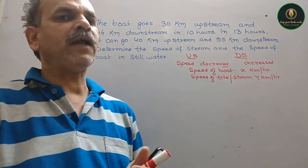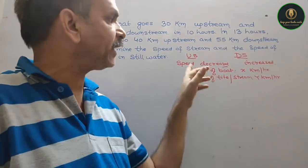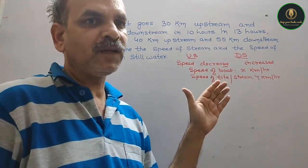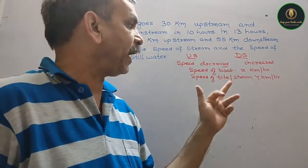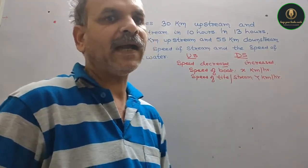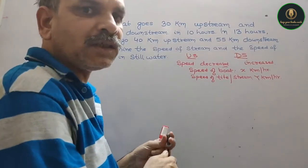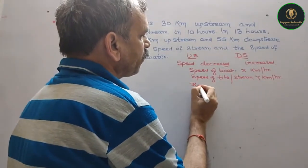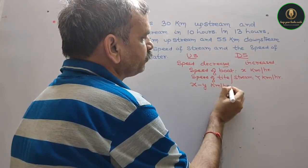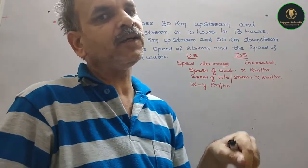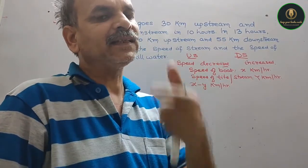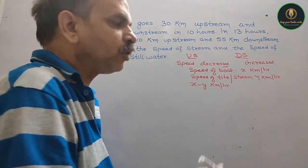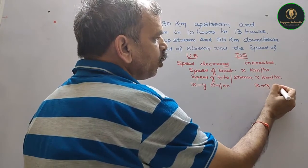Now, when we are going upwards, our speed gets decreased or reduced. The speed of the boat is opposed by the speed of the stream, so the speed of the boat going upstream is x minus y km per hour. And when we go towards the downside, the stream and the boat speeds add up, so this will be x plus y km per hour.